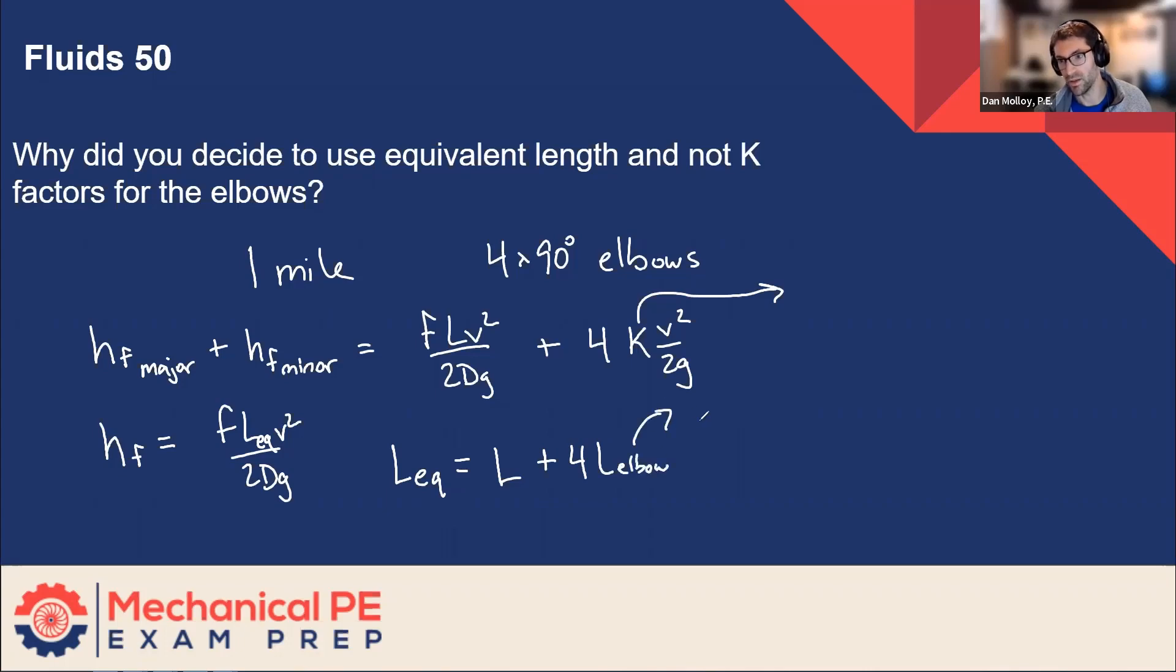And this can be looked up in the table for 90 degree elbows, whereas the K factors would be looked up in a table for K factors.